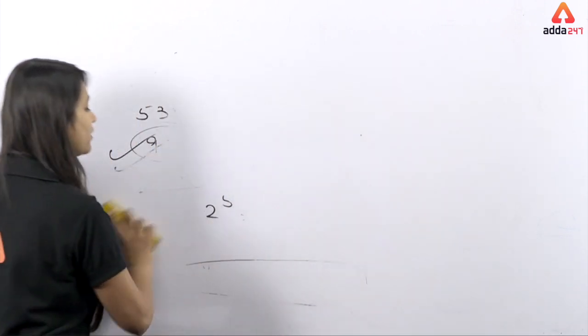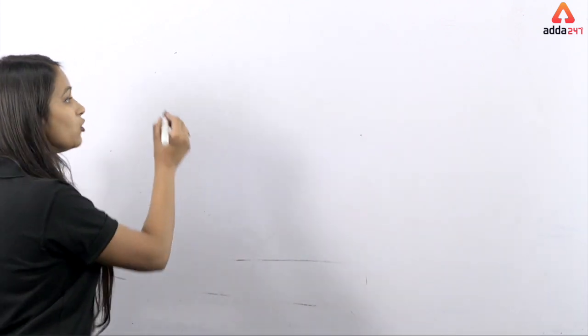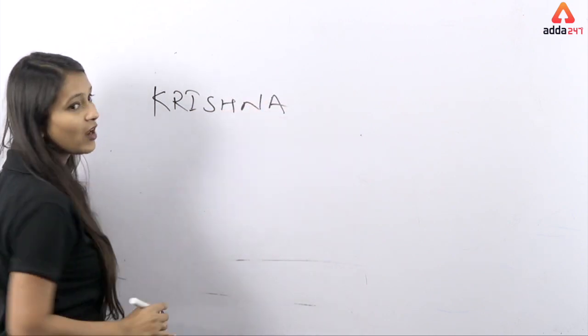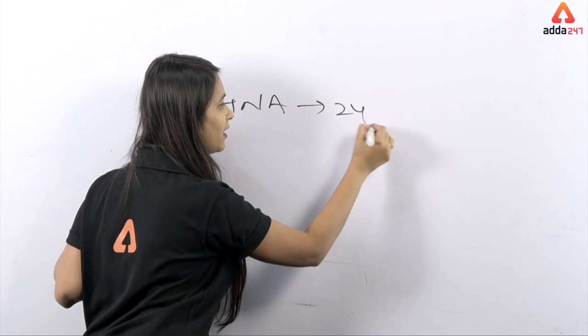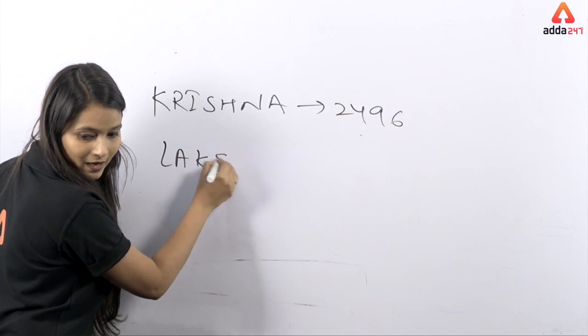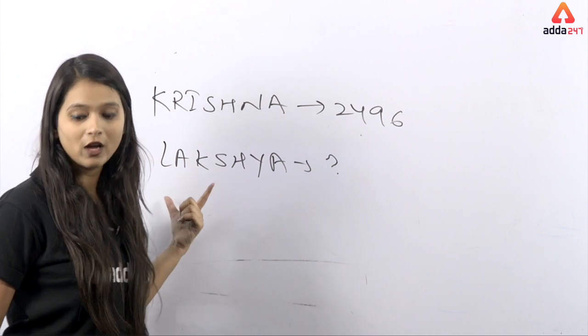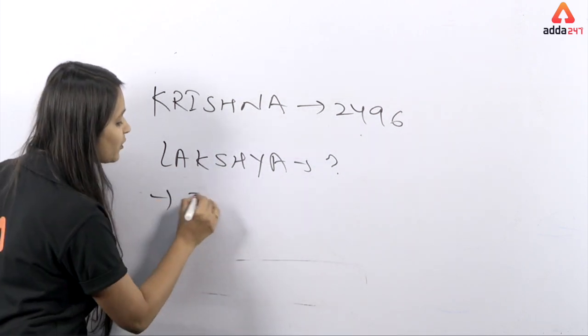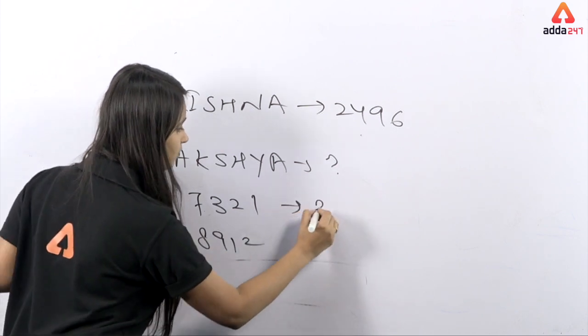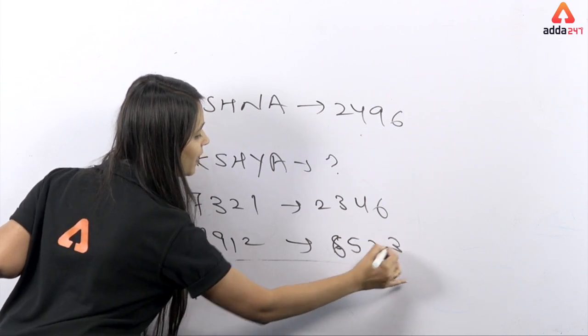Okay, let me give you a homework question. This session will end and the 9 o'clock session will start. Our question is: If Krishna is coded as 2496, then what will Arjun be? Let me give you the options.